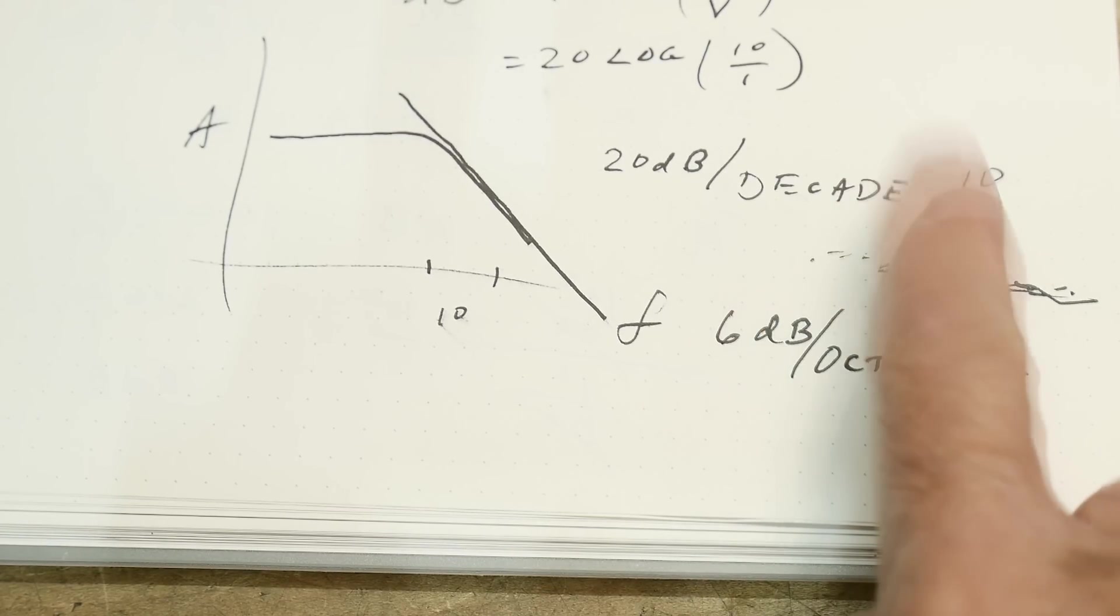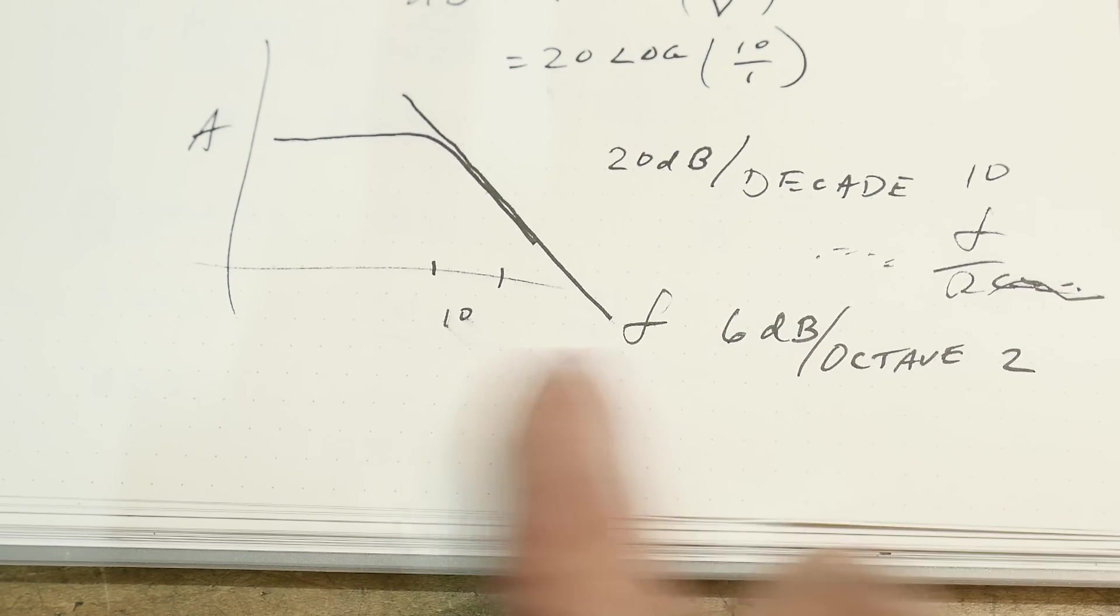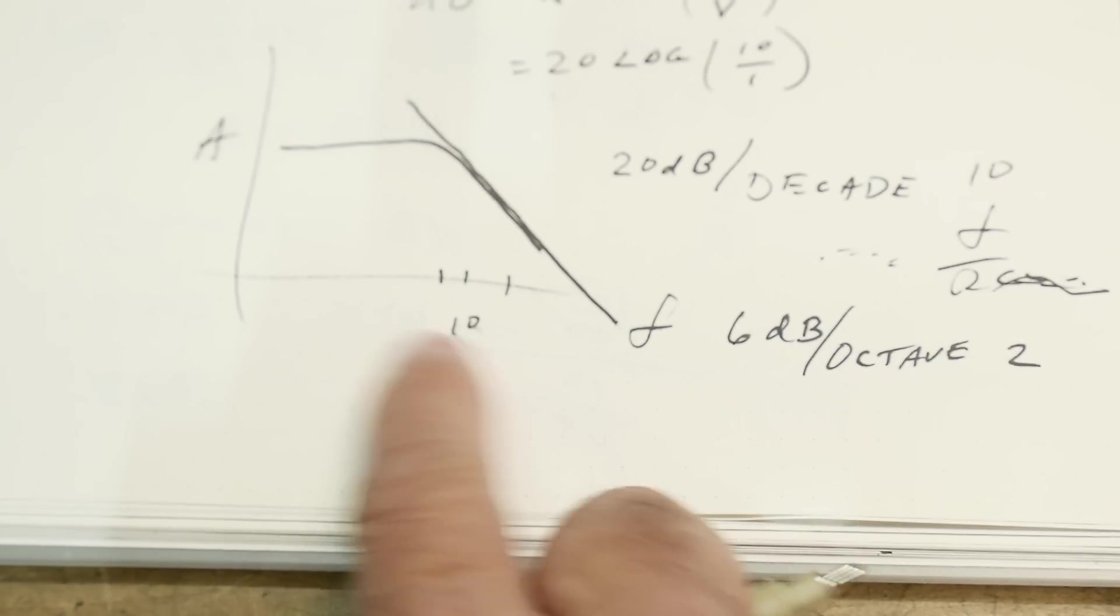This is 10 times the frequency, this is 2 times the frequency. This is 10, this is 2. Octaves are 2, decades are 10. So we only go down 6 dB if we only go over 2, not over 10.